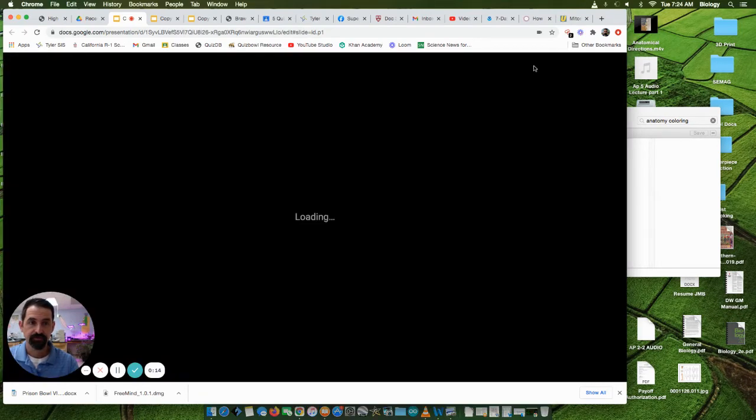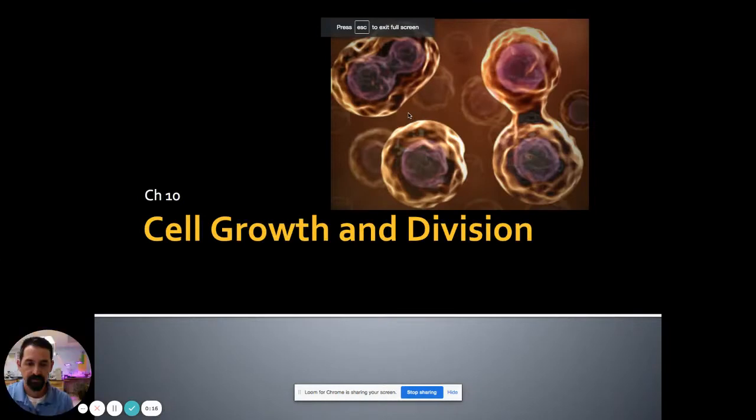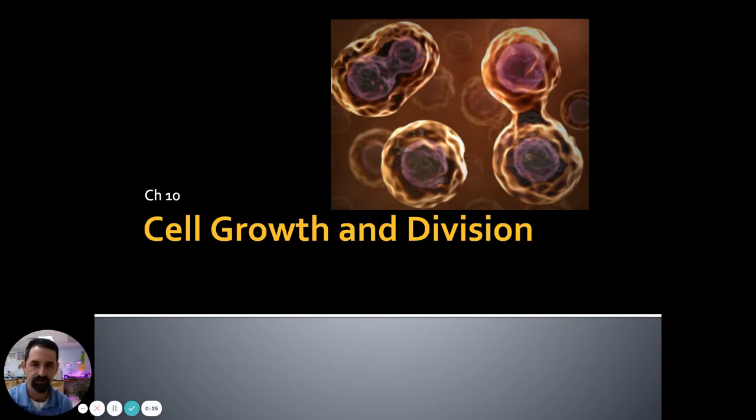Okay, so the first question is why do we even need to do this whole cell division thing? Well, we already know that living things are made of cells and cells come from cells, so cells have to have a way of replicating to make more of themselves to obey the laws of the cell theory. There's other reasons, really good reasons, that cells need to divide.